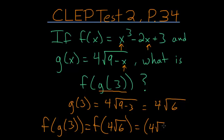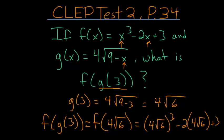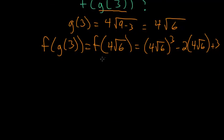So we have 4 root 6 to the third power minus 2 times 4 root 6 plus 3, and now simplifying. Since we have a product here, we'll cube each 4 and the square root of 6.